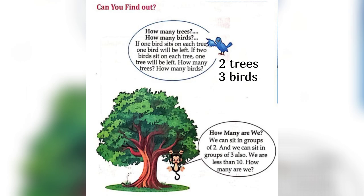How many are we? We can sit in groups of two, and we can sit in groups of three also. We are less than 10. So here if we multiply 2 into 3, we get the answer 6.